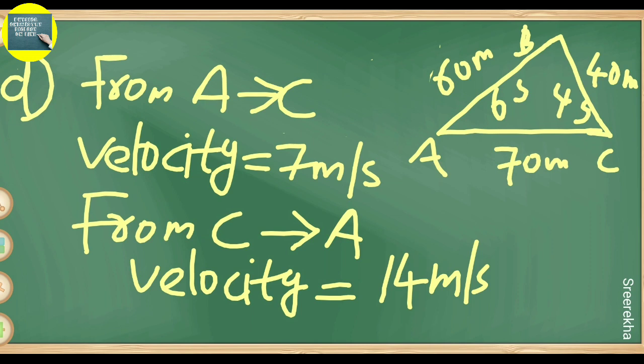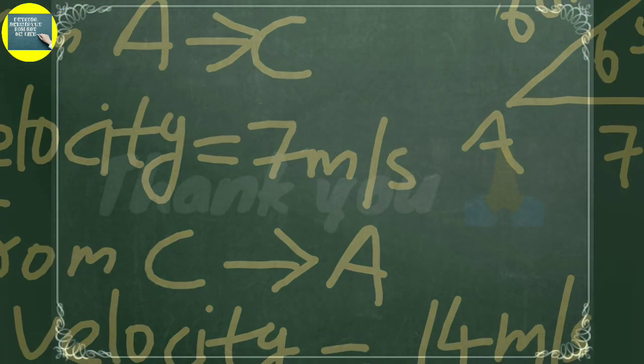The velocity on reaching C from A is 7 meters per second when time is 10 seconds. When returning from C to A in 5 seconds, the velocity is 14 meters per second. The difference in velocity arises because the time taken differs: 10 seconds from A to C versus 5 seconds from C to A.